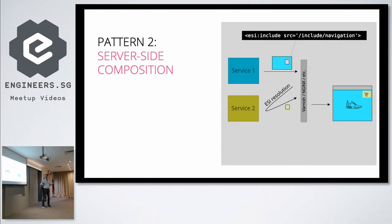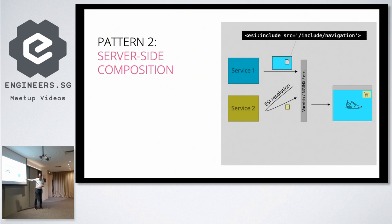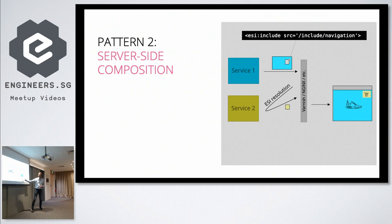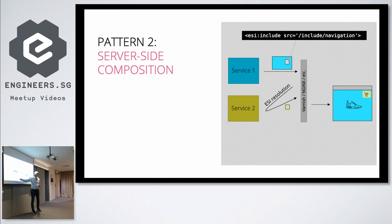The blue team thinks: 'We need to be independent, we don't have to talk to the yellow team, fantastic!' They build a service call and render the address. For Germany, the code flow is: the classified page service calls the contact detail service, gets the JSON, and renders it in the correct place — street name, house number, zip code, city. The blue team is happy; they could implement it without bothering the yellow team.